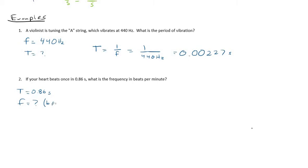So make sure we give our answer in beats per minute here. So again, frequency is just equal to the inverse of the period. So that is going to be 1 divided by 0.86 seconds.